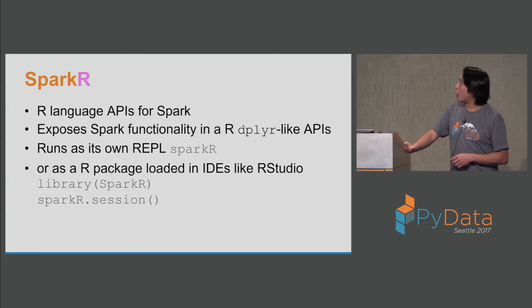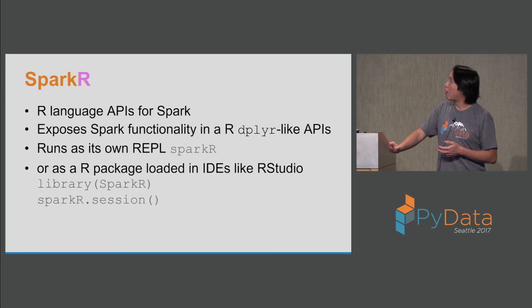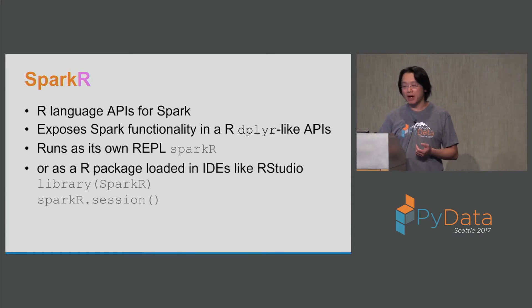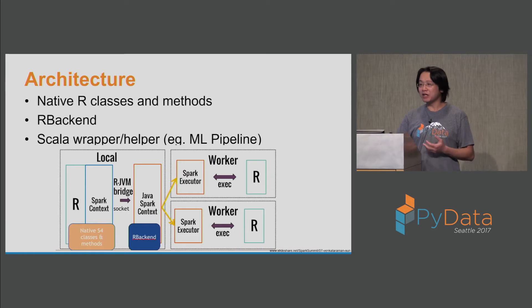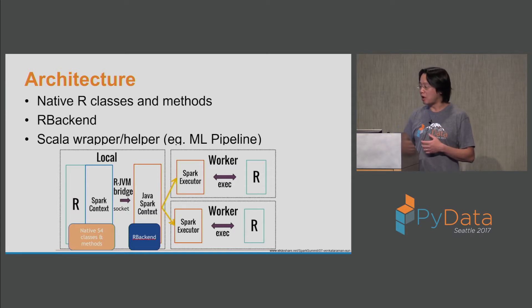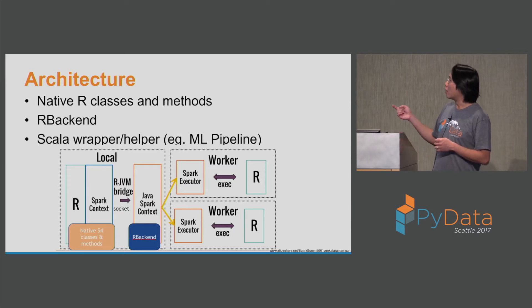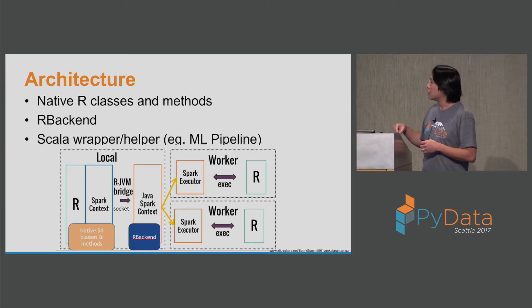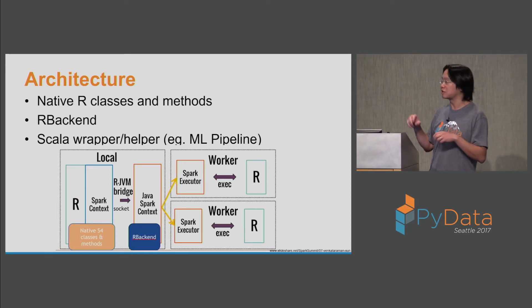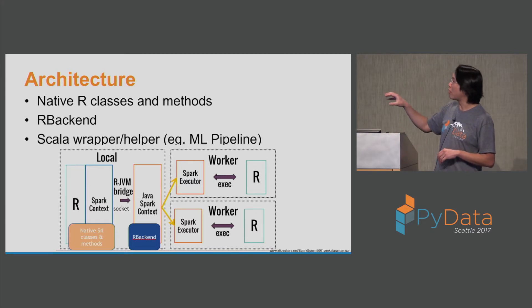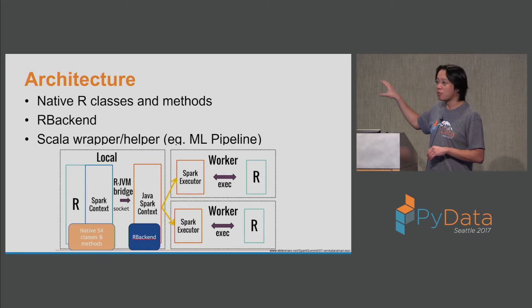SparkR is the R language binding for Spark. It exposes functionality similar to a dplyr package. It has a REPL and can be loaded as a package in IDEs like RStudio. Architecturally it's very similar to Python, but instead of Py4J, there's a proprietary implementation of serialization and communication using sockets through something called the R backend running in the JVM. It also has helper functions running in the JVM for complex things like building an ML pipeline. At a high level: you get the JVM process, executors and workers, and R processes on the right-hand side.